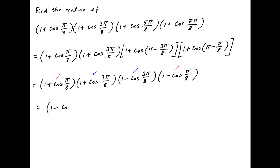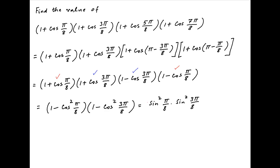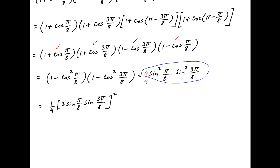Combining the first and fourth terms, and then the second and third terms, we get (1 - cos²(π/8))(1 - cos²(3π/8)), which equals sin²(π/8) · sin²(3π/8). Now we multiply and divide by 4, so the expression becomes (1/4) · [2·sin(π/8)·sin(3π/8)]².